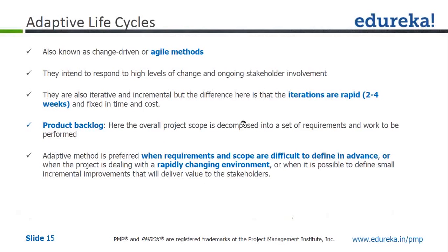The third one is adaptive life cycle, also known as change-driven or agile methods. They intend to respond to high levels of change and ongoing stakeholder involvement. In adaptive life cycle, the scope is not at all clear and there will be a high level of changes. Iterations are rapid — two to four weeks — and fixed in time and cost. The overall project scope is decomposed into a set of requirements and work to be performed, called the product backlog, which is updated with each iteration.